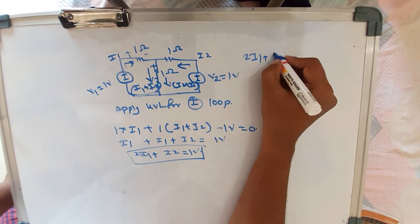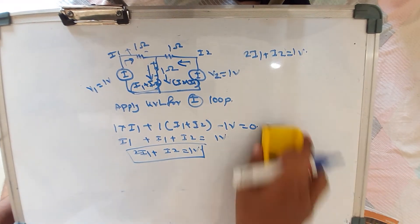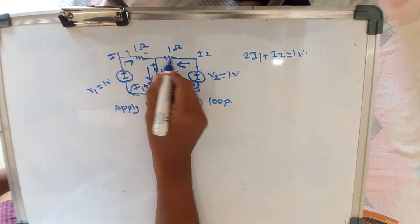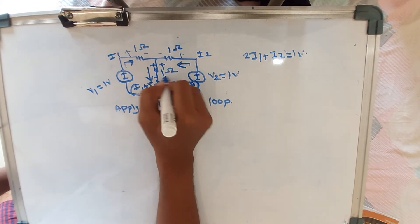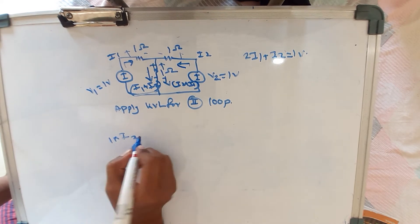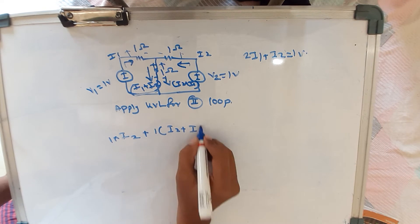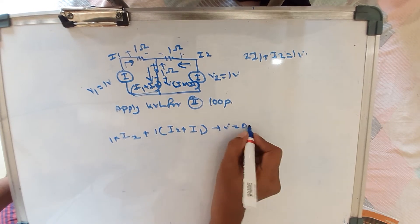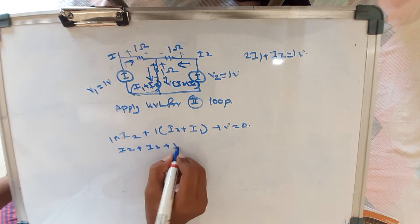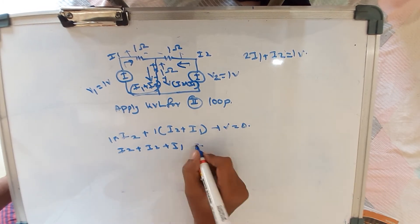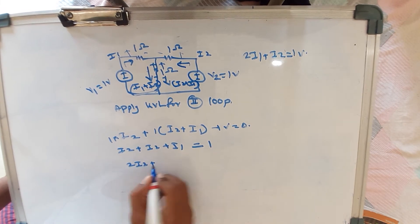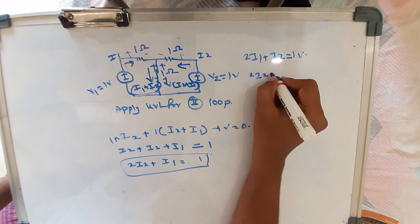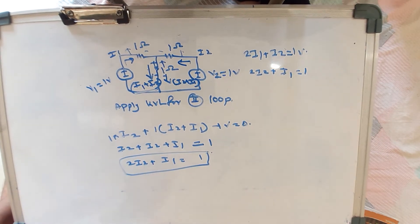The first equation is: 2I1 plus I2 equals 1 volt. Similarly, applying KVL for the second loop, following the same process, we get the second equation: 2I2 plus I1 equals 1. This can be rewritten as I1 plus 2I2 equals 1.